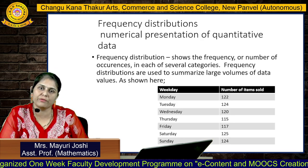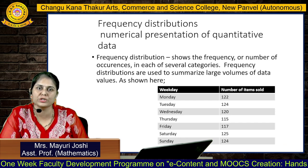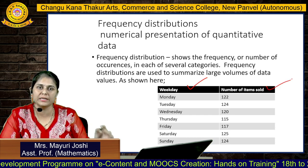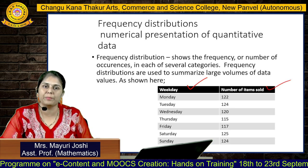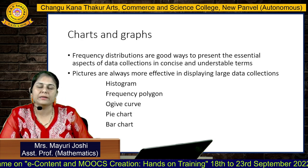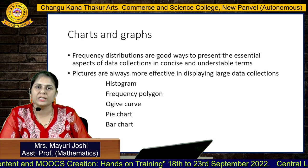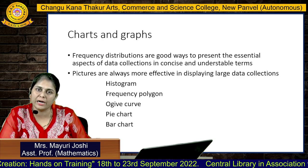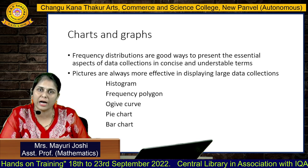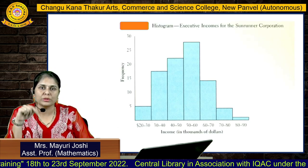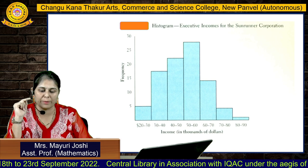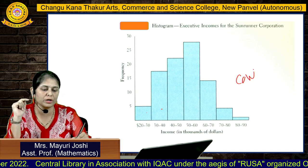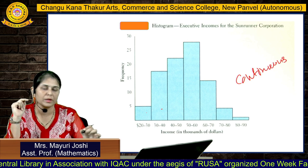Another one is frequency distribution. Frequency distribution defines the variable in the first column and the frequency — the repetitive count — in the next column. Then we define charts and graphs: histograms, frequency polygons, ogive curves, pie charts, and bar charts. These are the charts where we can define our data.